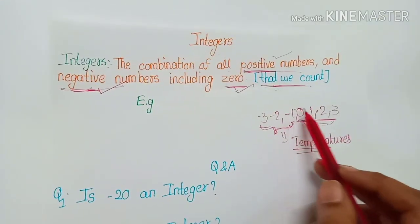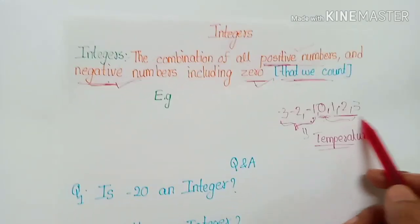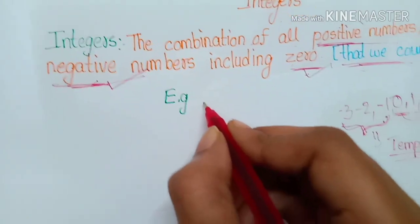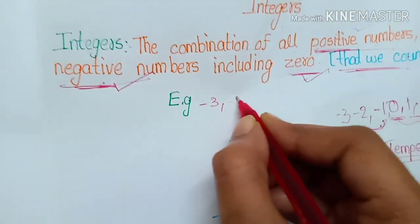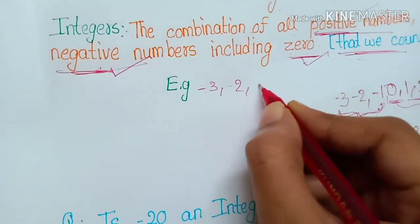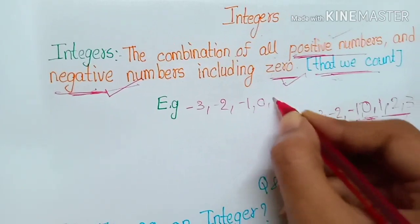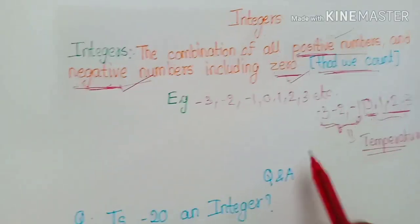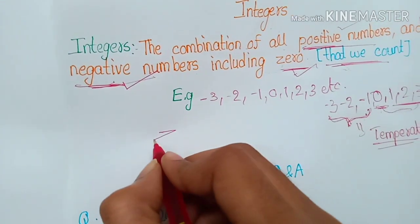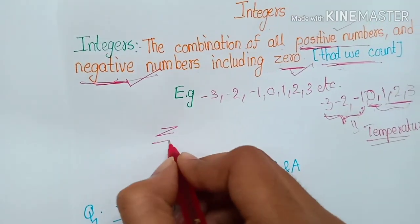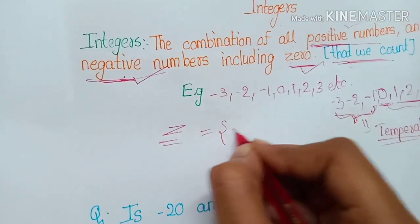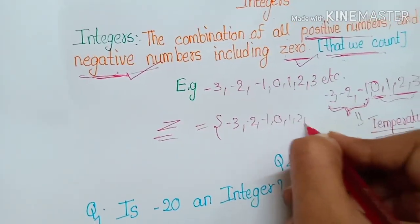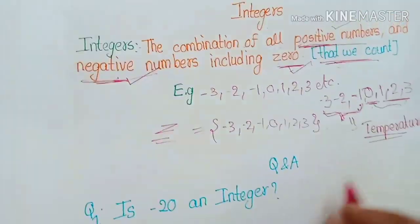The examples of integers start from minus three, minus two, minus one, zero, one, two, three, and so on. Integers are denoted by Z. So we write: Z = { ..., minus three, minus two, minus one, zero, one, two, three, ... }.